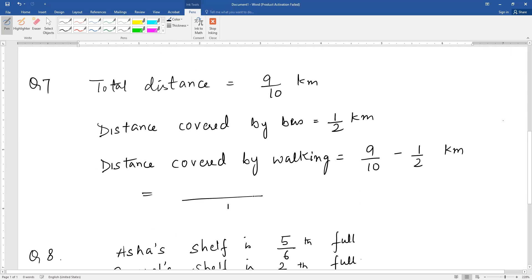Now we take LCM. LCM of 2 and 10 is 10. 9 stays as is. What do we multiply 2 by to get 10? 5. So this gives you 9 minus 5 by 10, or 4/10 kilometers.